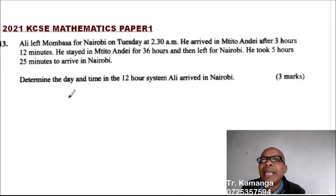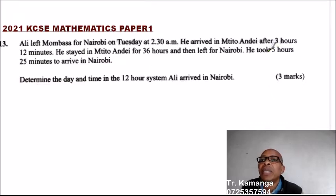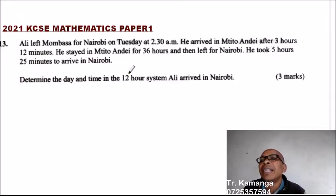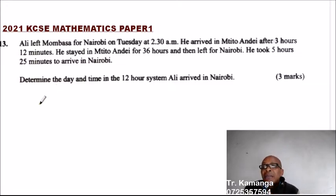Question number 13. Ari left Mombasa for Nairobi on Tuesday at 2:30 AM. He arrived in Mutito Andei after 3 hours 12 minutes. He stayed in Mutito Andei for 36 hours and then left for Nairobi. He took 5 hours 25 minutes to arrive in Nairobi. Determine the day and time in the 12-hour system that Ari arrived in Nairobi.